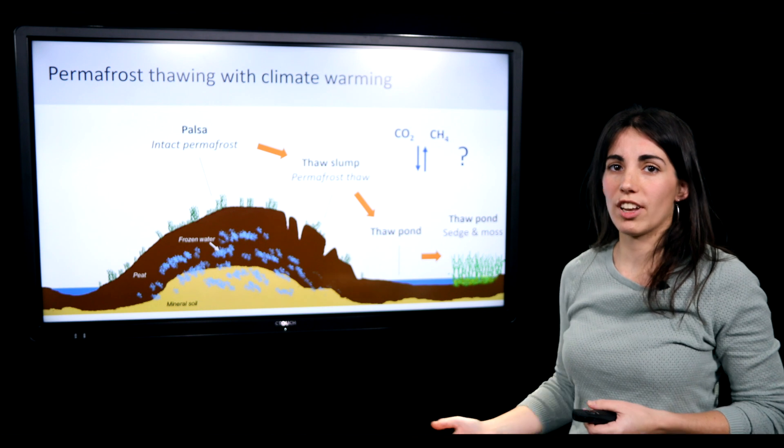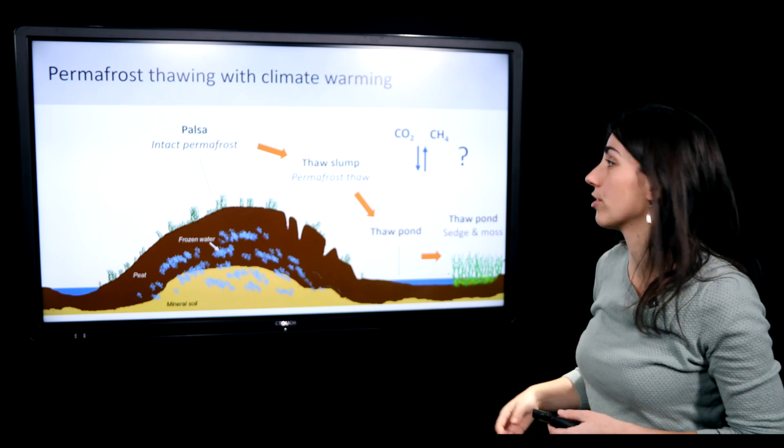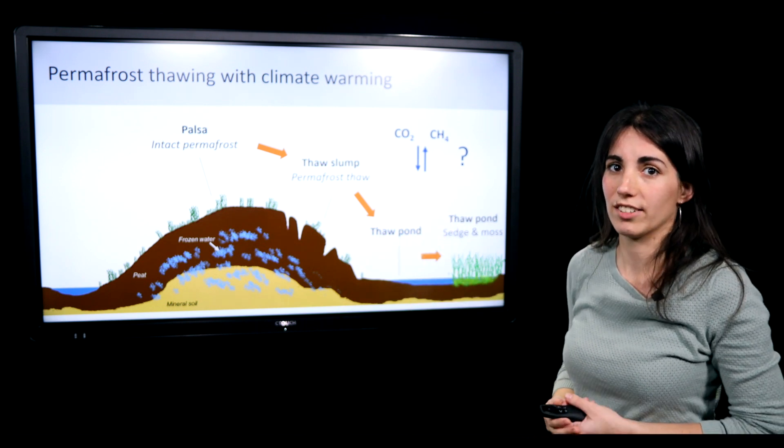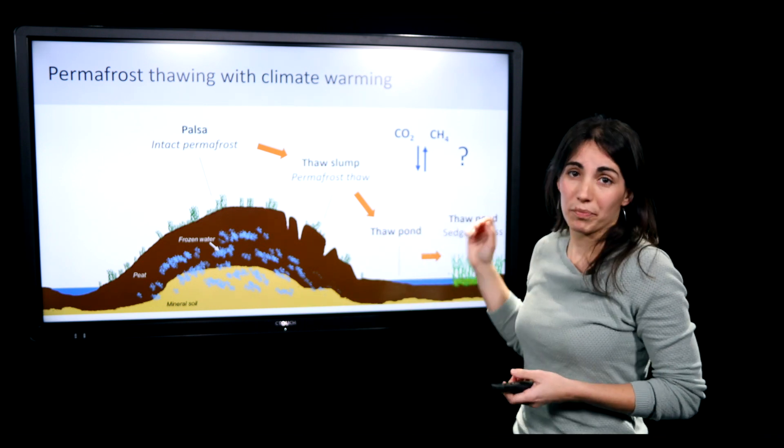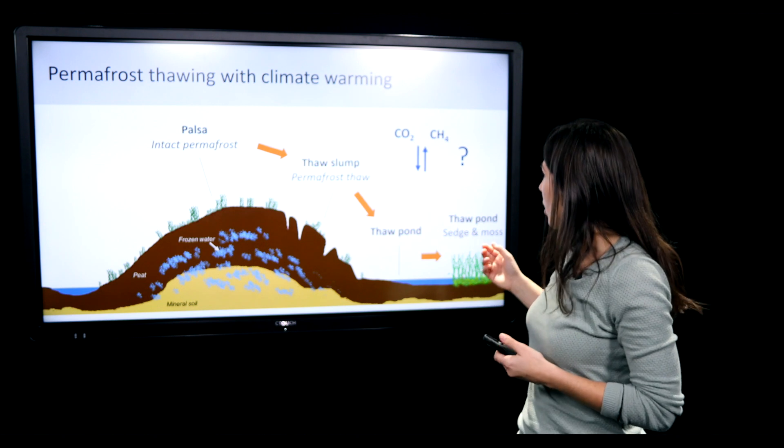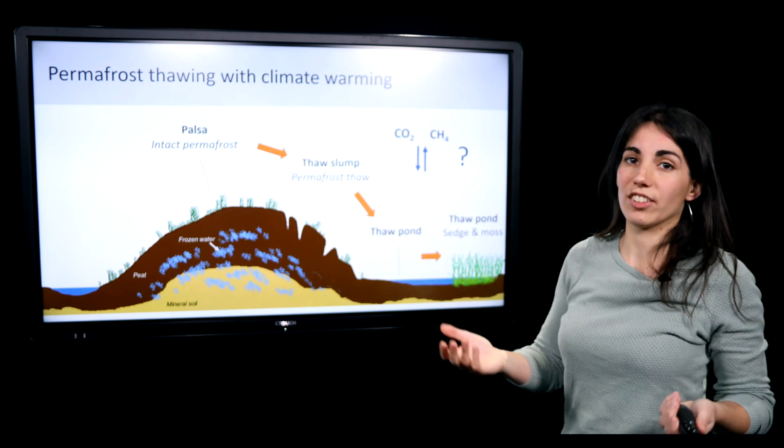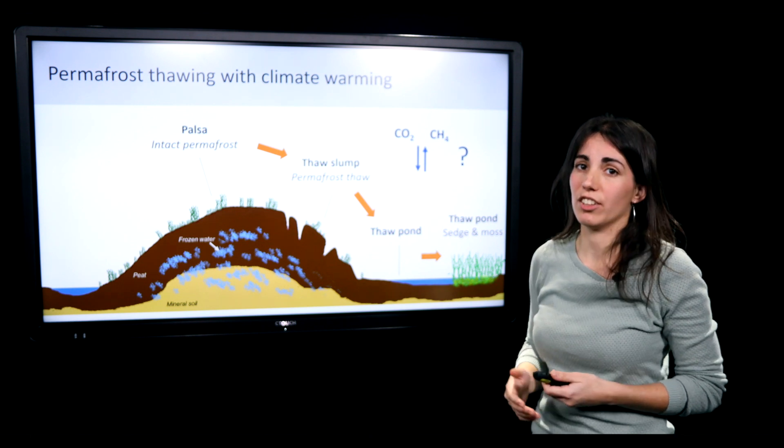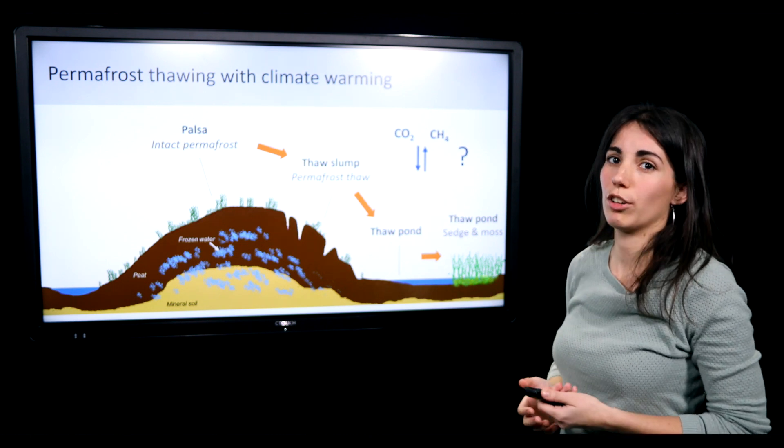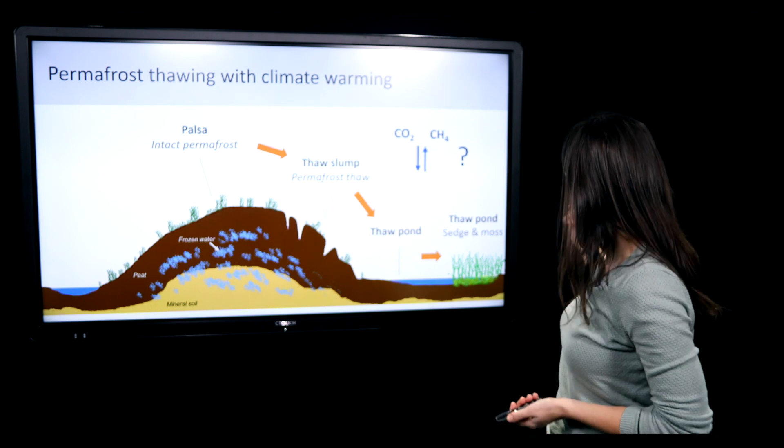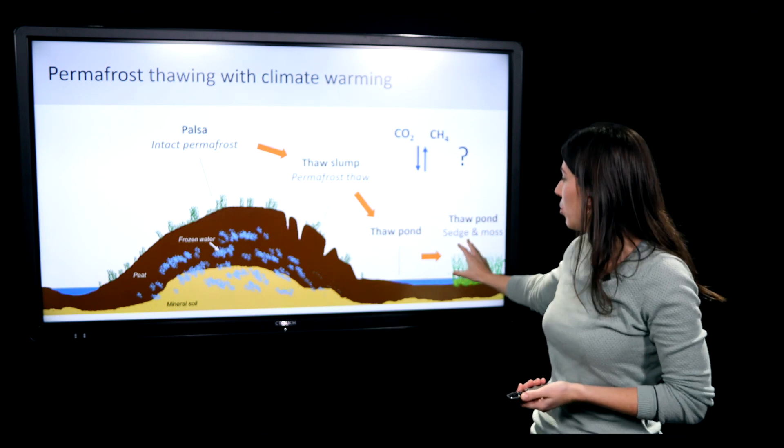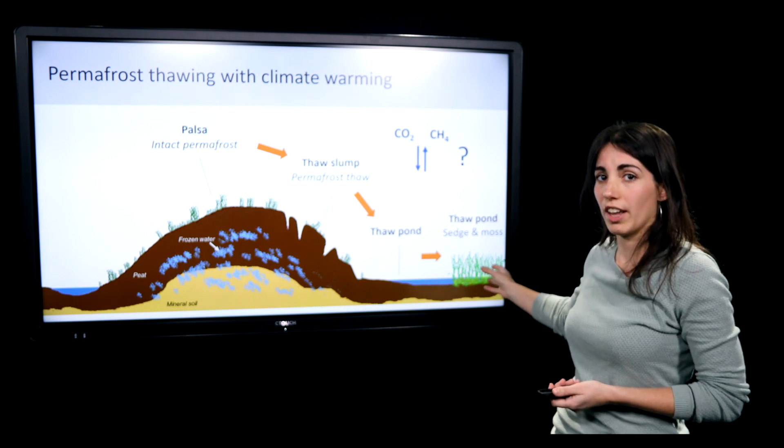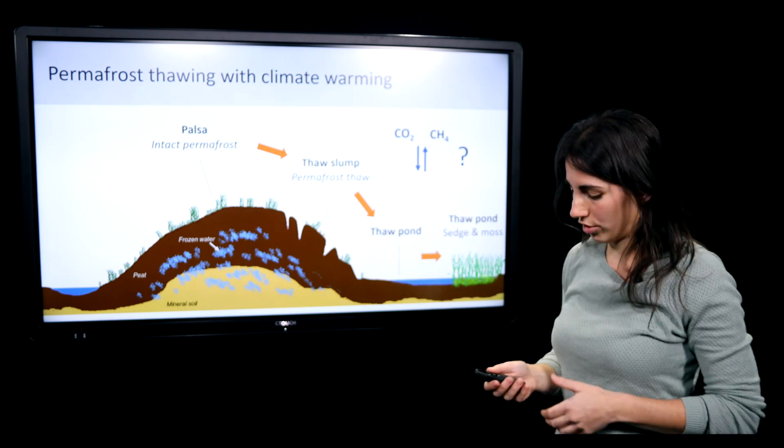These processes have important consequences for the emission of CO2 and methane, both greenhouse gases. CO2 and methane are greenhouse gases that can enhance warming, and actually methane is a stronger greenhouse gas than CO2. But when these thaw ponds arise, there can also be regrowth of vegetation, and this could also have important effects.